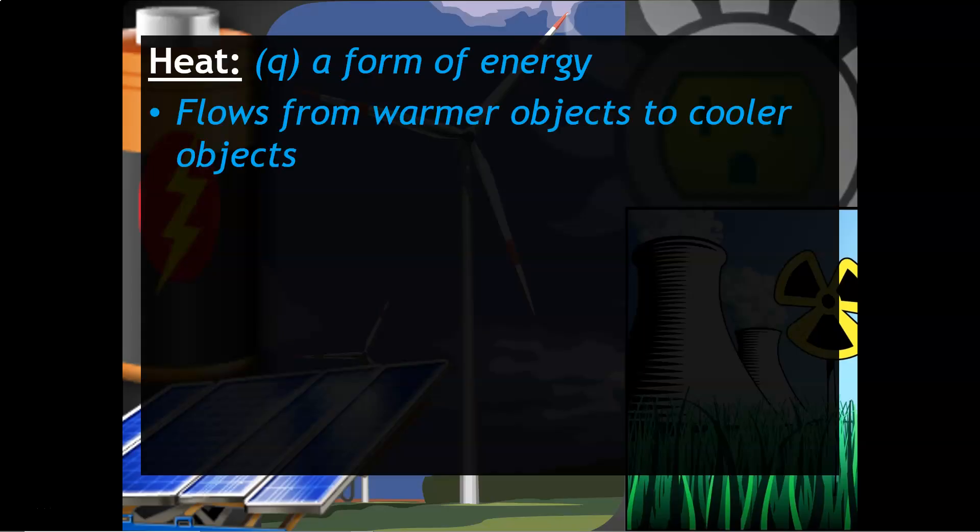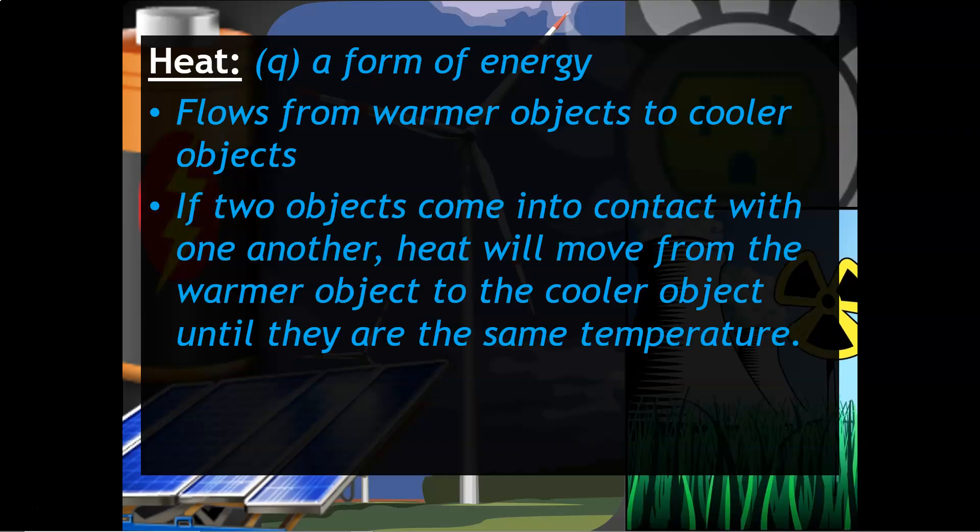Heat will flow from warmer objects to cooler objects. If two objects come into contact with one another, heat will move from the warmer object to the cooler object until they reach thermal equilibrium, which is also basically the same temperature.